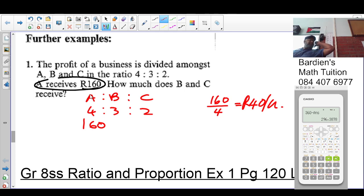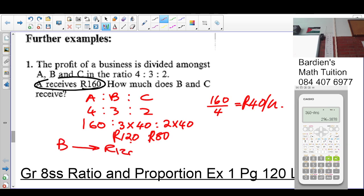Okay, 40 rand per unit. So how many units does C get? Three, so it's three times 40 is 120. And C gets... so the question is how much does B get? So B gets 120 rand and C gets 80 rand. You guys understand?